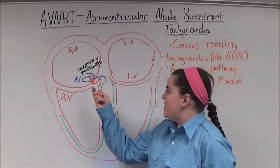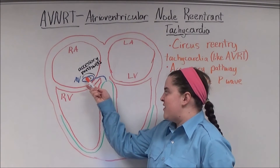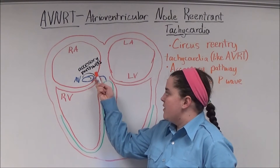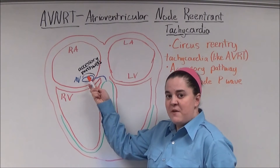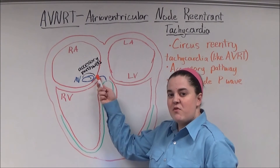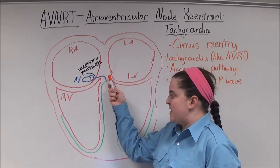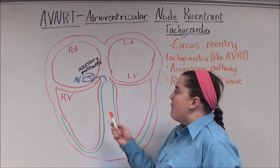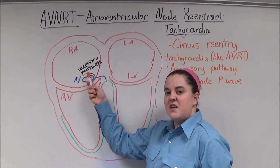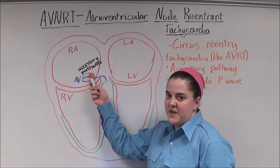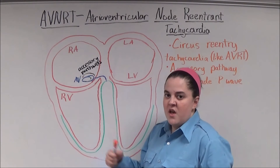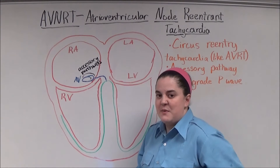It occurs when there's an accessory pathway either within the AV node or near the AV node. When the impulse hits the AV node it's paused and then sent through the bundle of His and the Purkinje fibers, but it's also sent up the accessory pathway causing a retrograde depolarization of the atria back to the AV node, where the impulse is then transmitted again.